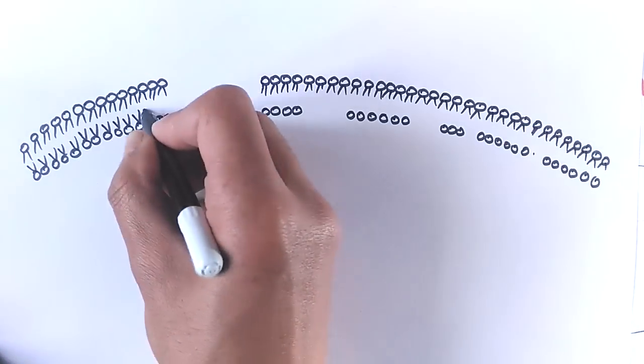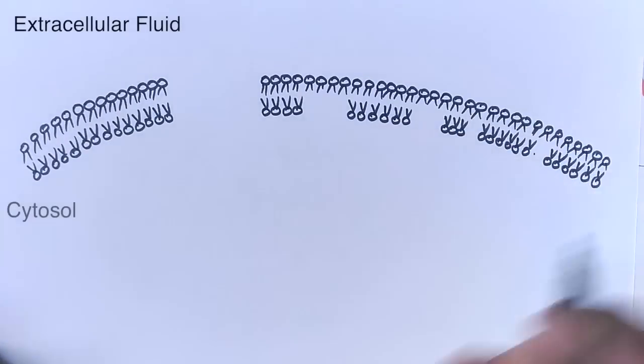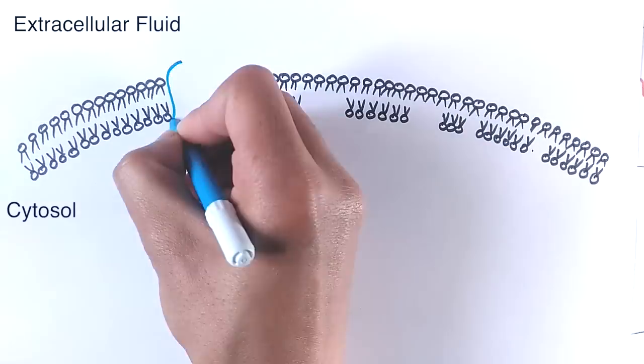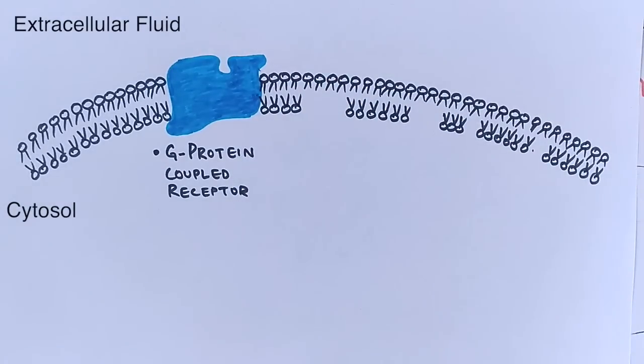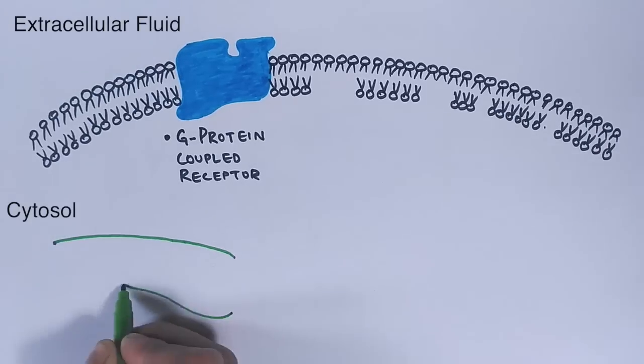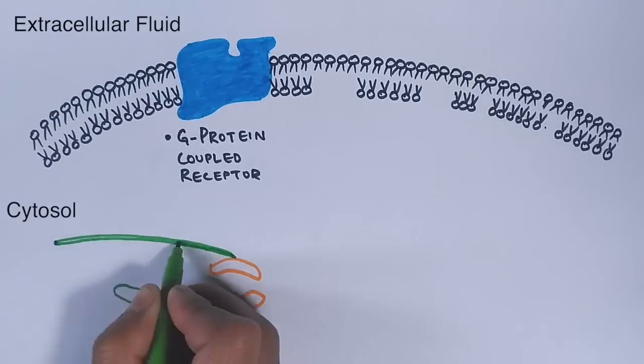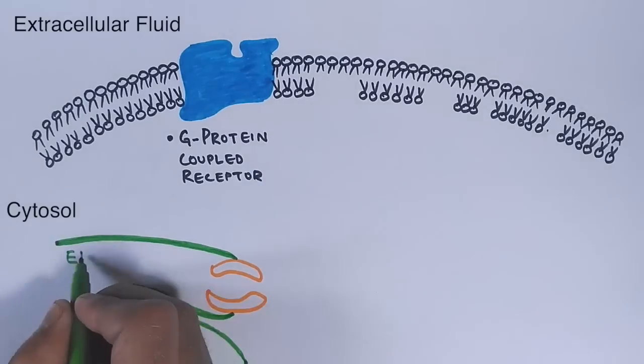First of all, let's draw lipid bilayer here, that's the plasma membrane. Then in this plasma membrane there's an embedded protein, that's G protein coupled receptor. Within the cell we have endoplasmic reticulum which we are going to draw here. This plays a crucial role in IP3 pathway or we can say calcium and IP3 pathway.